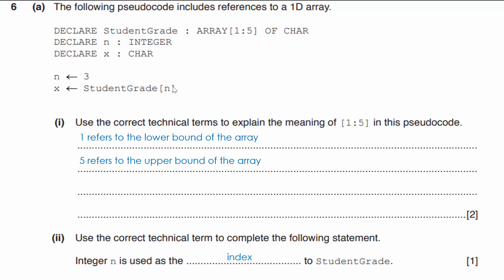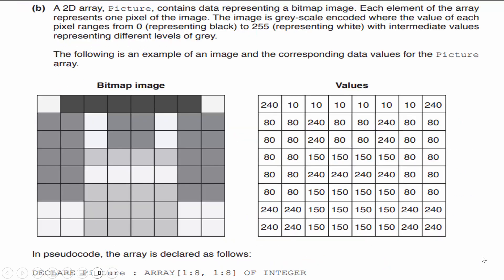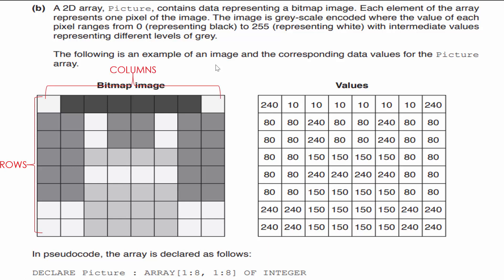Now let's take a look at a 2D array practice question from the same exam. 2D arrays can be a little tricky at first — you have to be familiar with how they work. A 2D array called picture contains data representing a bitmap image. Each element represents one pixel, and the image is grayscale encoded where values range from 0 (black) to 255 (white). When working with a 2D array, we reference elements using both the row and the column — picture[i][j] refers to row i and column j.